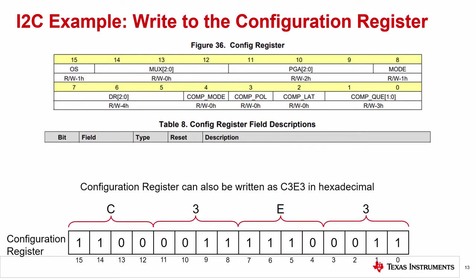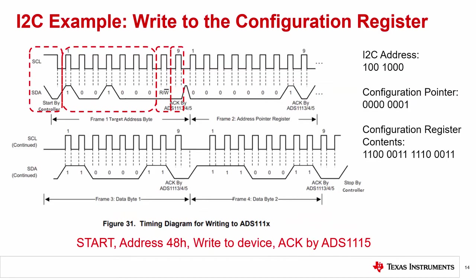Now we have the complete configuration register setting for the ADS-1115. We'll use these bits for the write to the register. This register can also be represented in hexadecimal as 0xC3E3. Figure 31 in the ADS-1115 datasheet shows a generic diagram for writing to the device. The figure has been altered to show the exact bit transaction sent to the device. We'll use the settings that we've previously discussed to show exactly what we need to write to the configuration register.